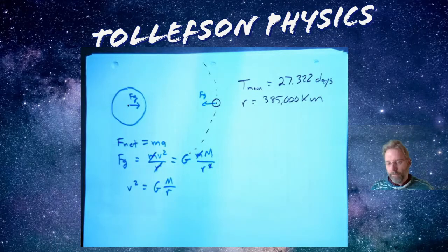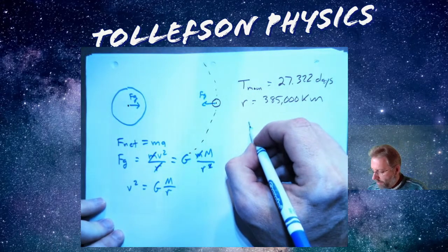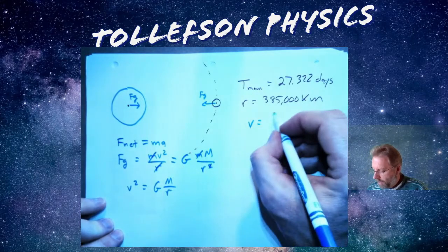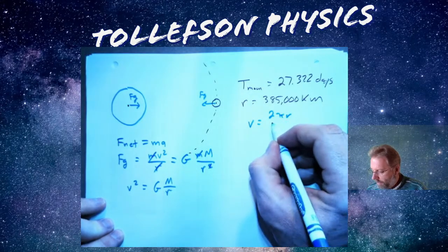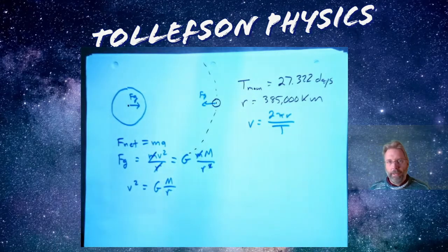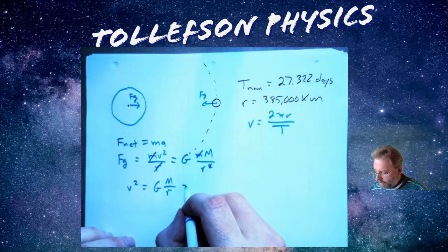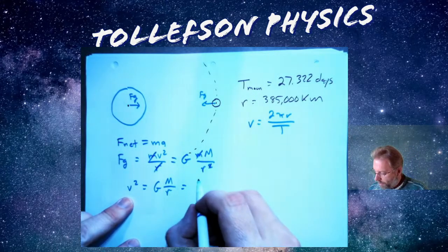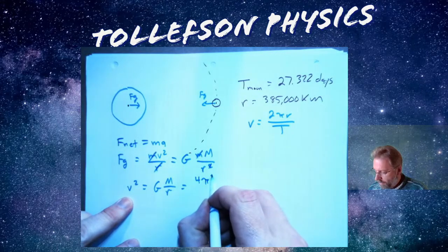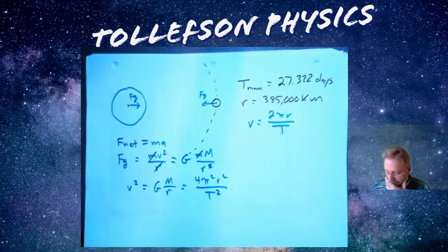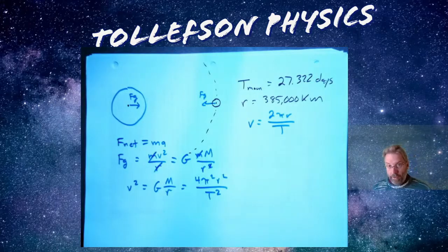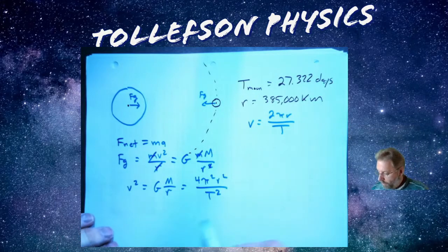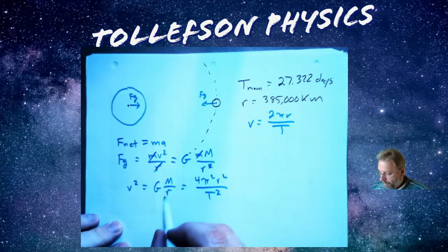And then the other thing that we've seen before and I'll write it to the side just to remind you. Velocity is the distance of a circle in this case divided by the period of the circle. So I'm going to substitute that in for v squared. I'm just going to write it, 2πr over t squared.